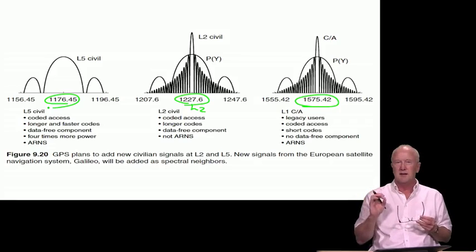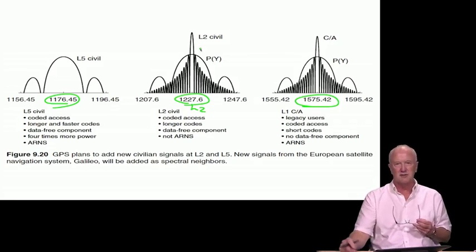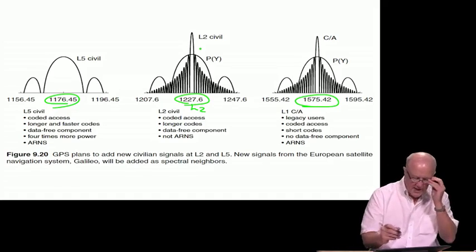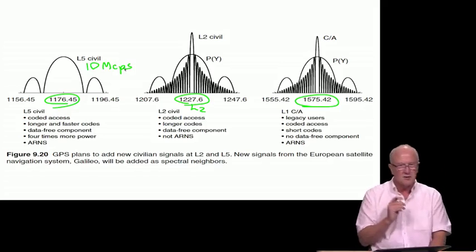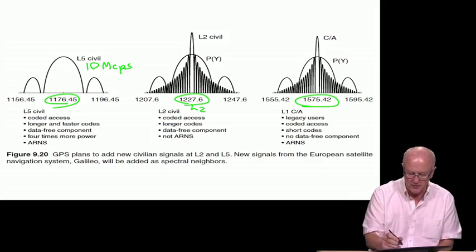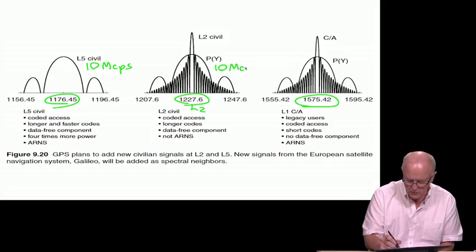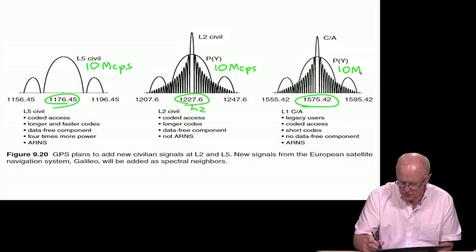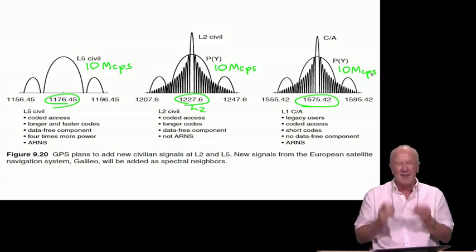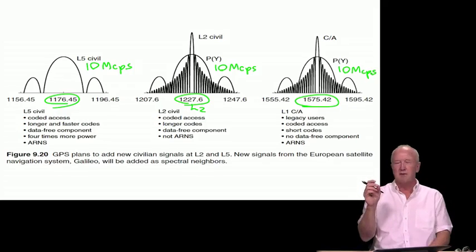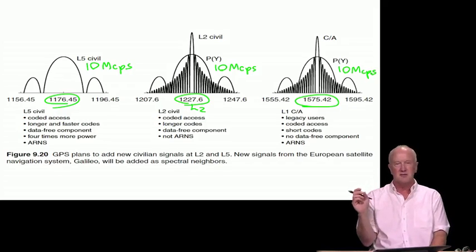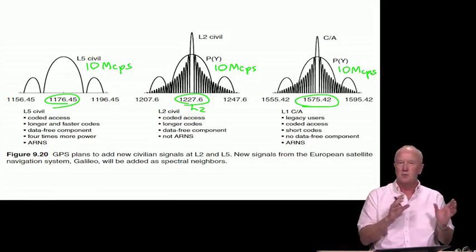Notice that it has a broader spectrum than either CA or L2 civil. And in fact, it is at 10 megachips per second. So it has the same chipping rate as the military code, PY. And the civilian community is extremely grateful for this, because it means that their performance when they have a jammer or radio frequency interference present in the channel will be much better.